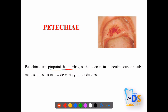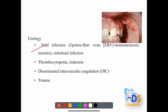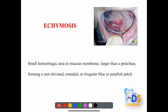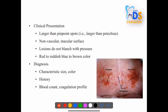Petechiae are pinpoint hemorrhages occurring in subcutaneous and submucosal structures, caused by viral infections, thrombocytopenia, leukemia, disseminated intravascular coagulation, or trauma. Ecchymosis are larger, non-elevated, rounded or irregular blue or purple patches that are non-vascular, macular, do not blanch on pressure, and are reddish to brownish in color. Petechiae, ecchymosis, and purpura are all considered red lesions.